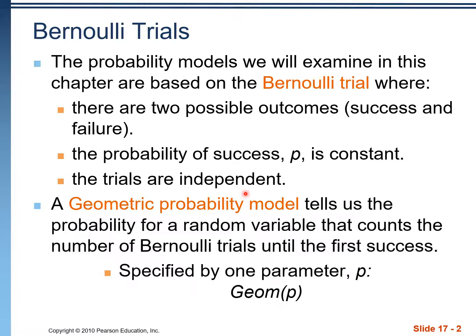The last criteria is that all the trials are independent of one another. If it meets those three criteria, we're dealing with Bernoulli trials, which could be geometric or binomial — we have to look at the text of the problem to figure out which one it is.